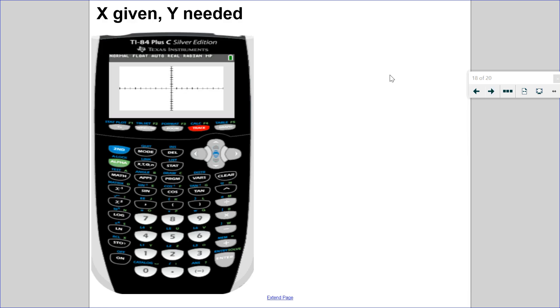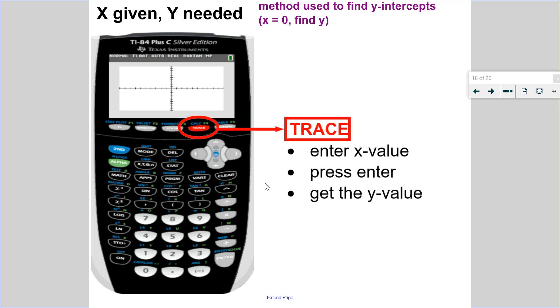The first type of problem is the x given y needed question. So this should look familiar because this is the method we use to find y-intercepts. x value is given, it's zero, and I want to find the y value.